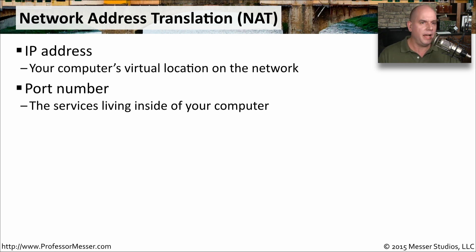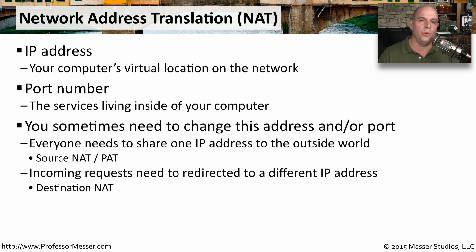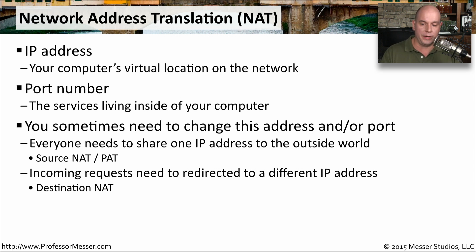Why would you want to change an IP address as it's going through the network? One reason is that you may have one set of private addresses on the inside of your network and one single public IP address that everyone else in the world sees. So when you communicate to Google.com, Google.com sees only that single external IP address, no matter what the internal IP address is. We refer to that process as a source NAT, because we're changing the source addressing before it gets to the destination web servers.